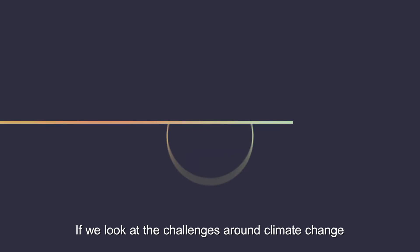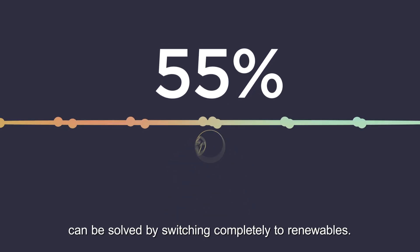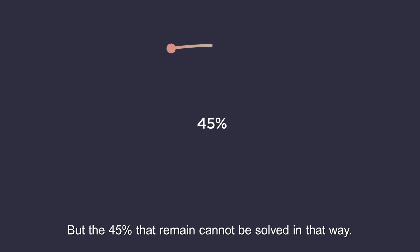If we look at the challenges around climate change, around 55% of CO2 emissions can be solved by switching completely to renewables, but the 45% that remain cannot be solved in that way.